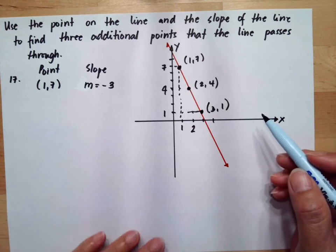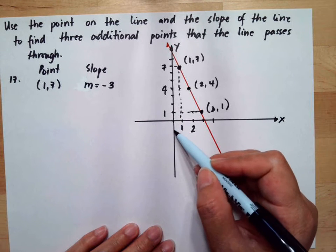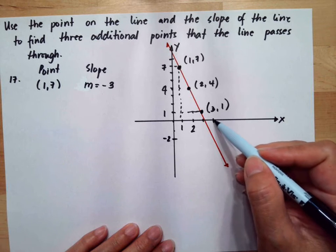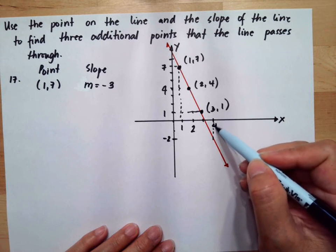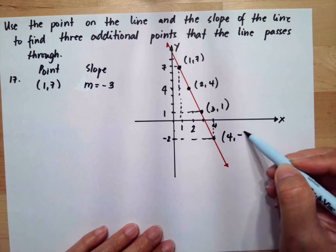So we need another point, so we need to do three steps down again. So we have 0, negative 1, negative 2, so this is negative 2. And one step to the right is 4, so this will be equal to (4, negative 2).